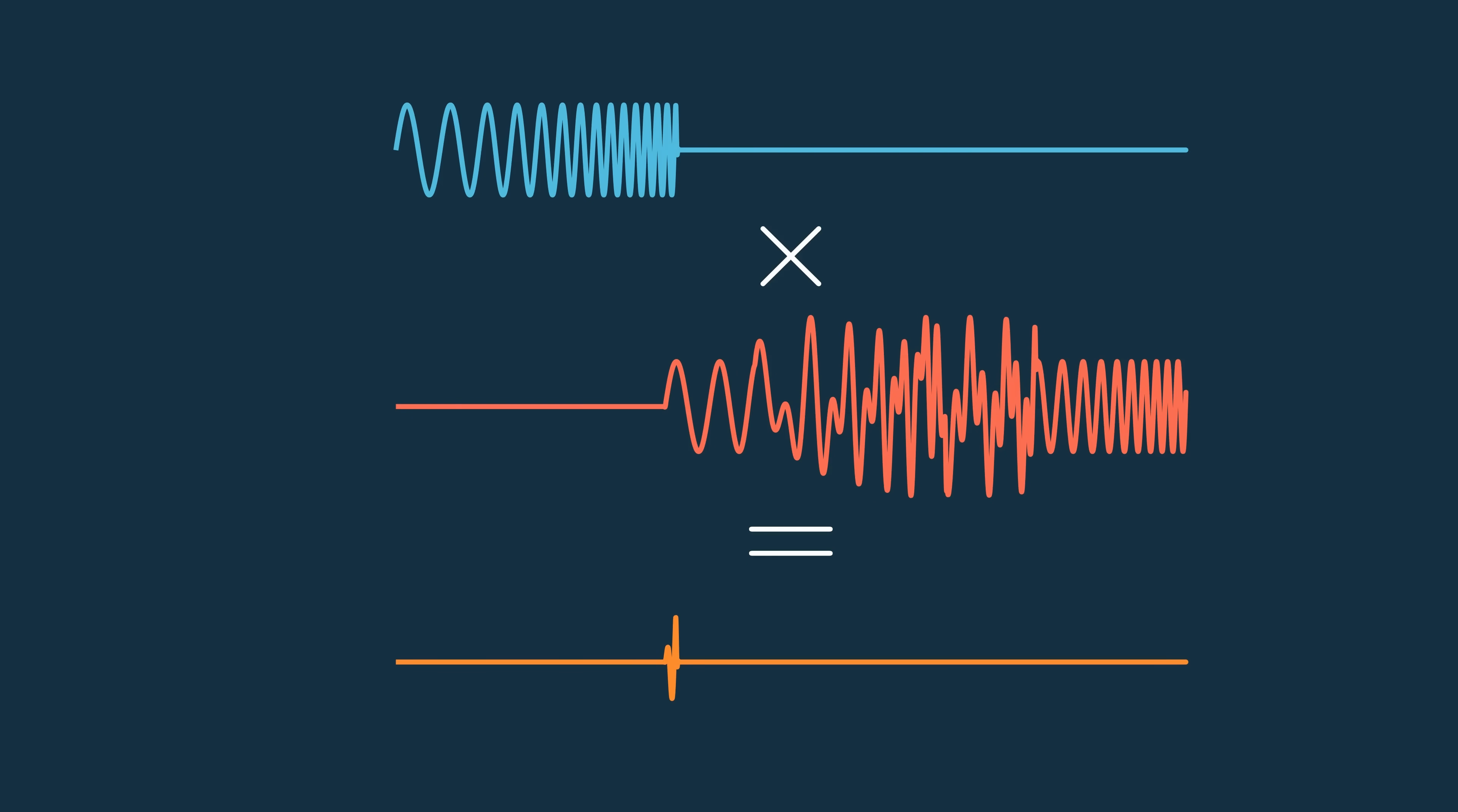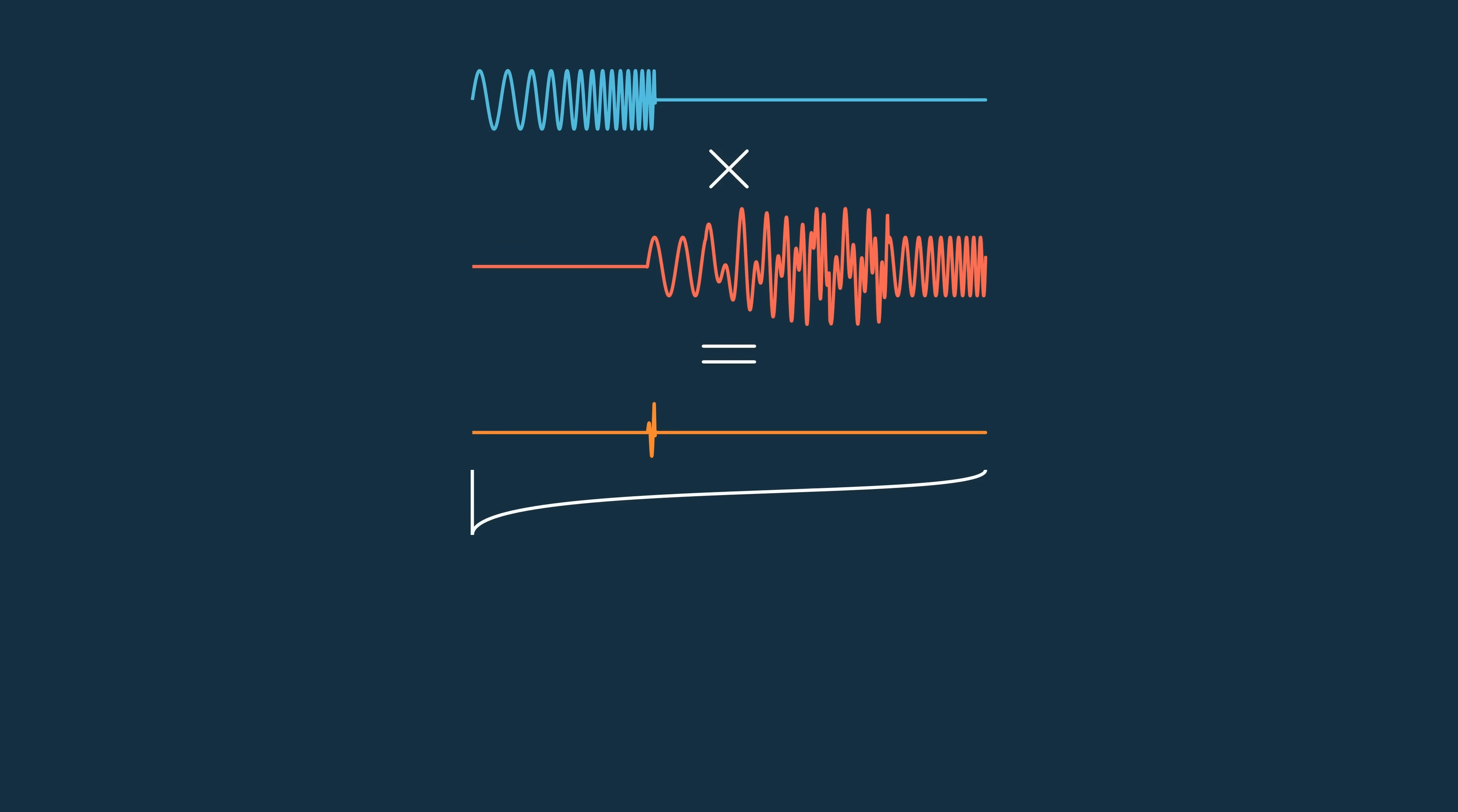Then you take the product of the two and sum all the points values. That then creates our first value. You can then shift the transmit signal one time unit to the right and do the same multiplication and summation to get a second point.